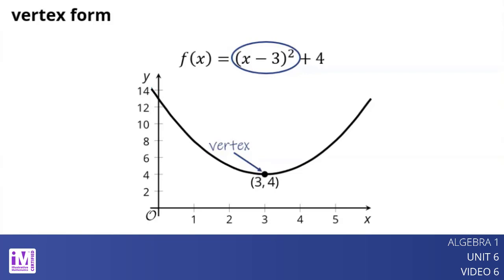In general, the vertex form of a quadratic expression in x is a times the quantity x minus h squared plus k, where a, h, and k are constants and a is not 0. The graph of the quadratic function opens upward when the coefficient a is positive and opens downward when a is negative.